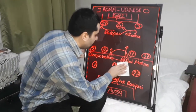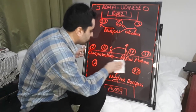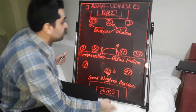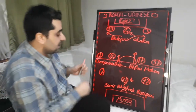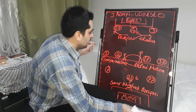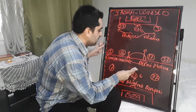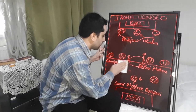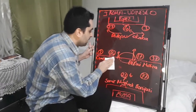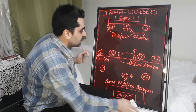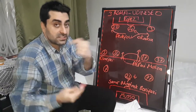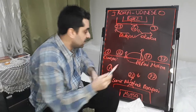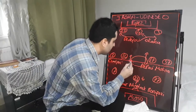Tolgay Arslan came off in midfield, and at the same time Wolos also came off. Makengo and forward Nestorovski were introduced.